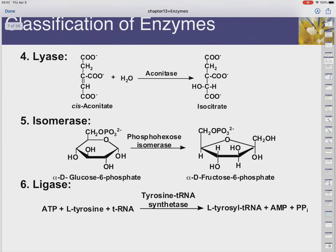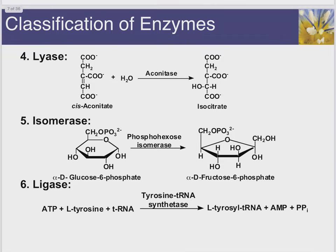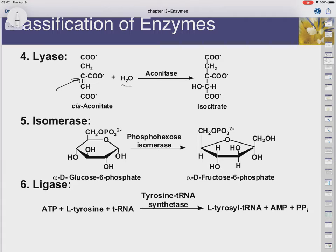So we've got a lyase. A lyase, remember, is going to remove or add a double bond. Here we see a double bond — in this case, water is added to the double bond and now we have no double bond. Aconitase actually turned cis-aconitate into isocitrate in this example. So that's a lyase.